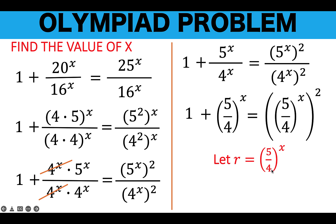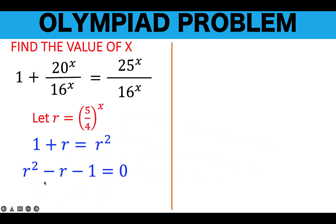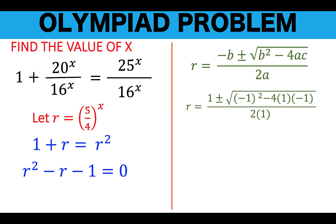Then the right side would be equal to r squared, so the equation becomes 1 plus r equals r squared. This is a quadratic equation. Solving for r, we write it in standard form with the right side equal to 0, and applying the quadratic formula, we find r equals 1 plus or minus the square root of 5, over 2. Since r equals 5 over 4 raised to x — a positive base raised to a variable exponent — r cannot be negative, so we ignore the minus sign.